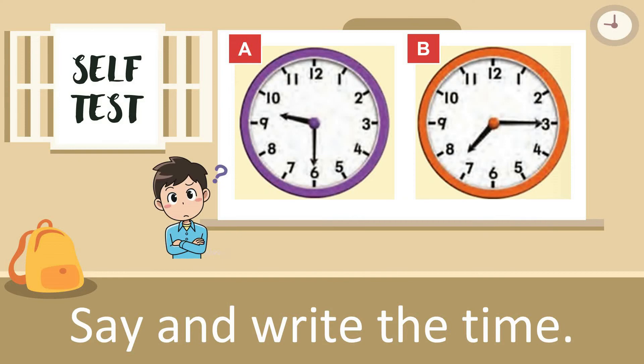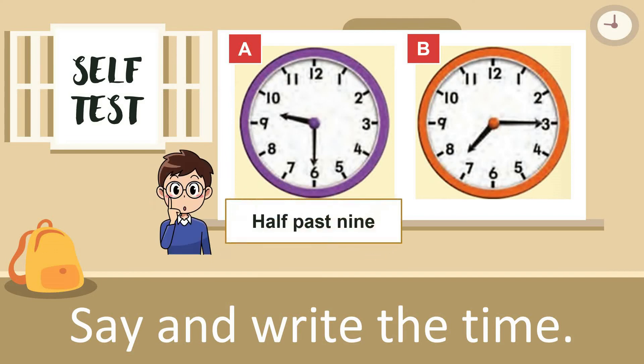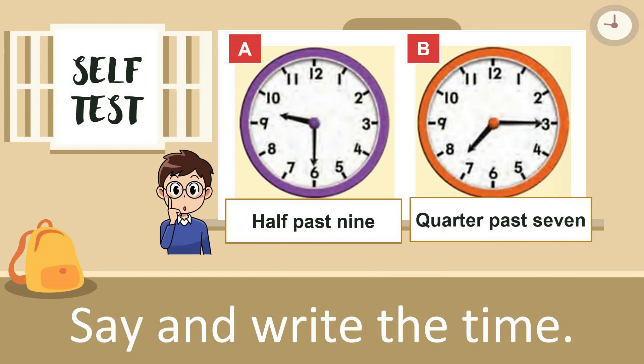Let's do a self-test — say and write the time. What is the time in clock A? Yes, you are all very smart — it is half past 9. Now look at clock B. What is the time? You are right, it is quarter past 7.